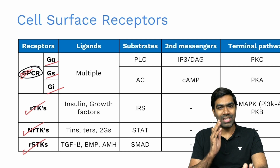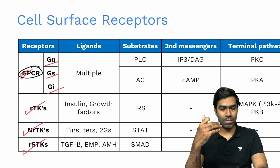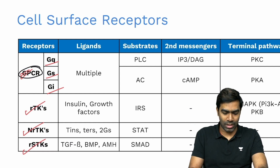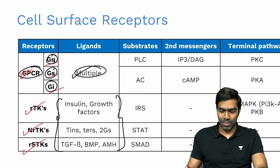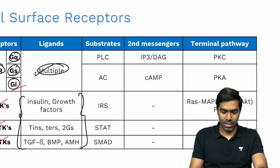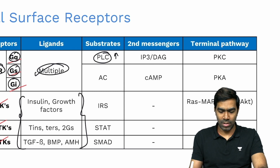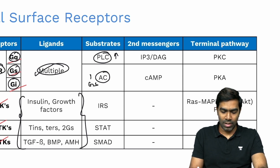A GPCR has seven transmembrane domains — also called seven membrane-spanning domains. On the outside it binds the ligand (hormone); on the inside it's coupled to a G protein, which can be Gq, Gs, or Gi type. Many ligands act via GPCRs. For the Gq-type GPCR, the substrate is phospholipase C, whose activity is increased when the Gq pathway is activated.